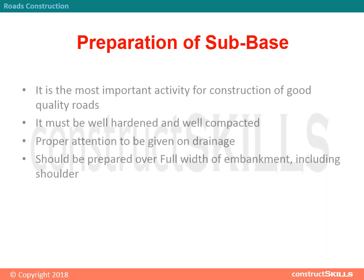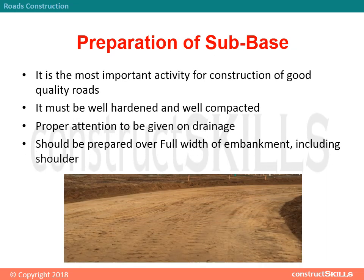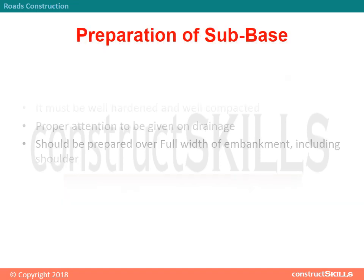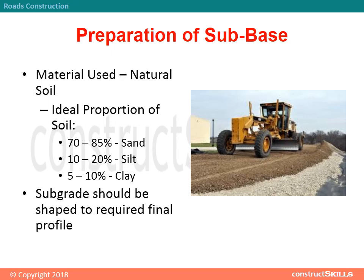Preparation of Sub-base: This is the most important activity for construction of good quality roads. It must be well hardened and well compacted, with proper attention given to drainage. It should be prepared over the full width of the embankment, including the shoulder. Material used for sub-base is natural soil. The ideal proportion of soil is 70 to 85% sand, 10 to 20% silt, and 5 to 10% clay. The sub-grade should be shaped to the required final profile.